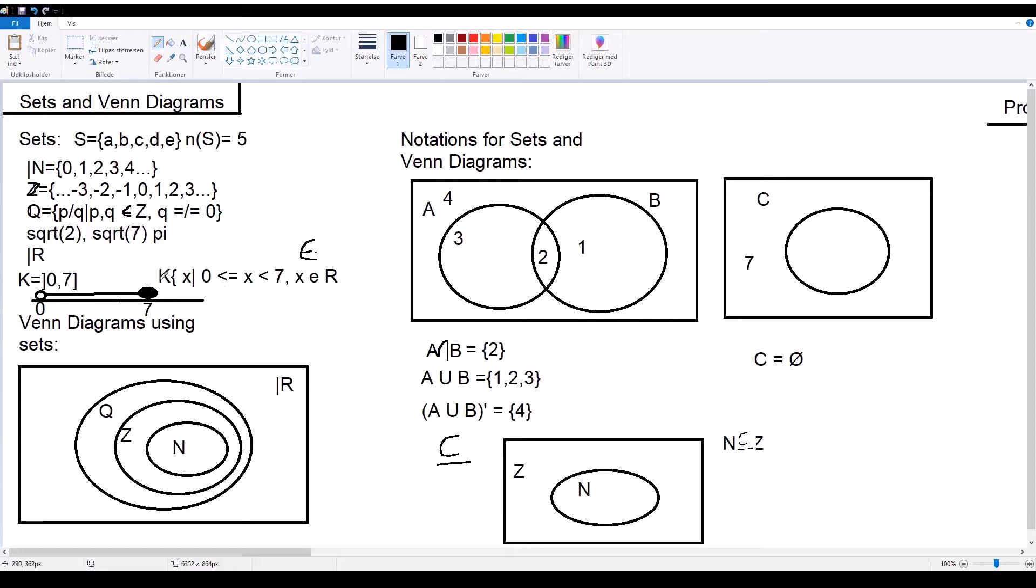And, the way it's defined is, over here, using K contains X, where 0 is less than X. It's hard to draw the symbol. And, 7 is greater than X. And, X is part of the real numbers. Again, here, there's the inside sign. And then you end with a bracket, which I forgot to put in.